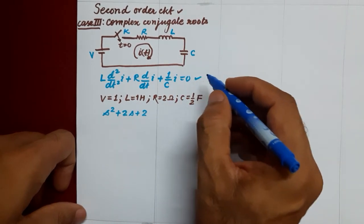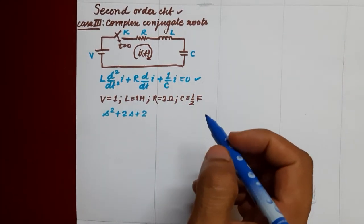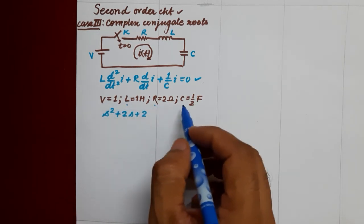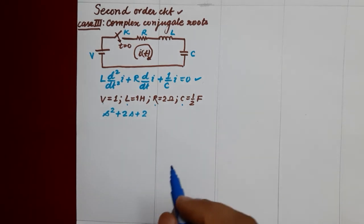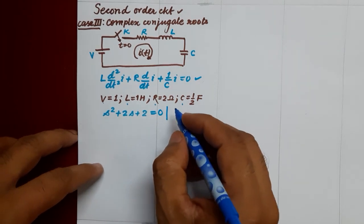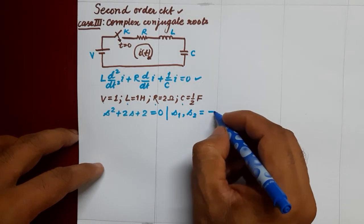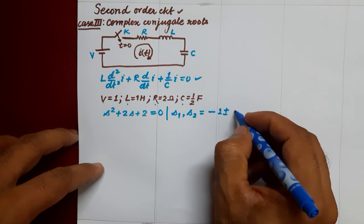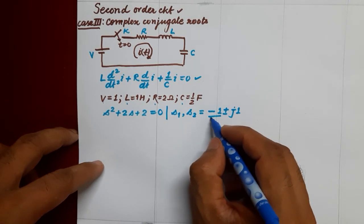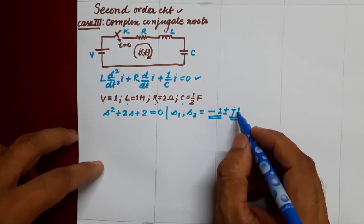For this circuit we have earlier written its corresponding differential equation, which comes out to be of second order. If we consider the given values of voltage source, inductance, resistance, and capacitance, then our characteristic equation becomes this, which results in two roots that are going to be complex. The roots have a real part which is negative and a complex part in conjugate form: minus 1 plus j1 and minus 1 minus j1.